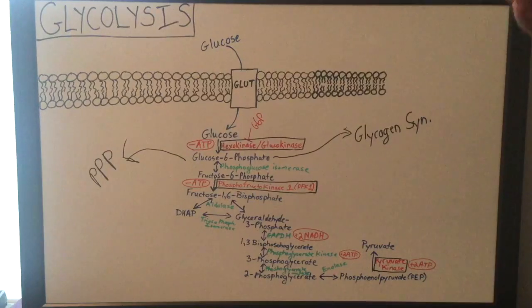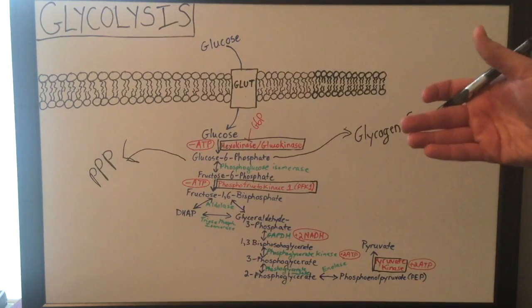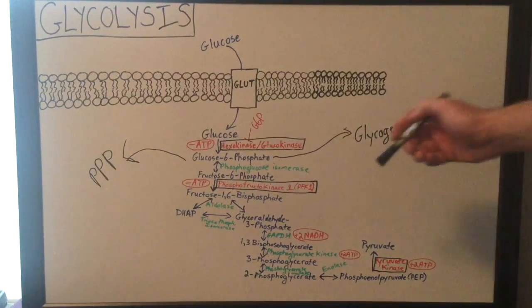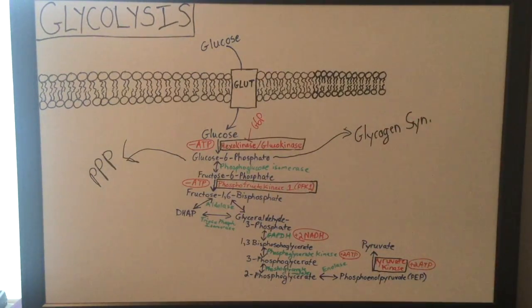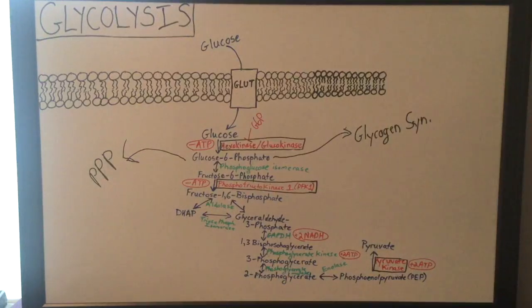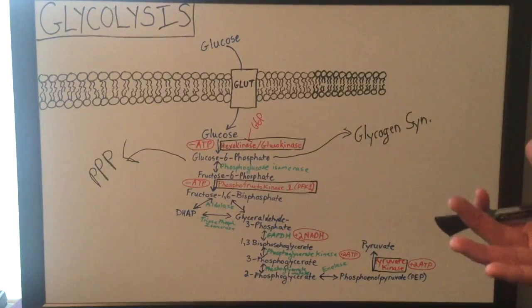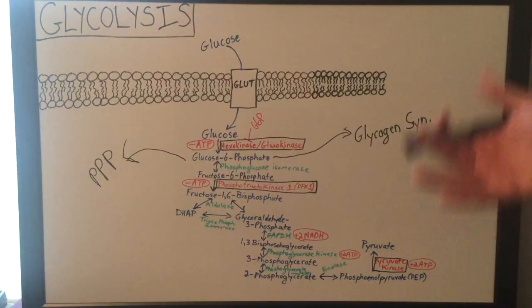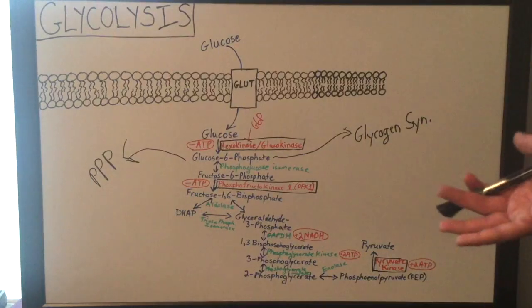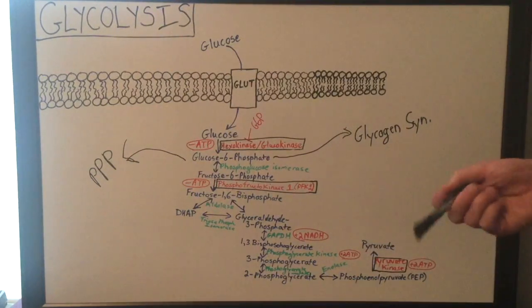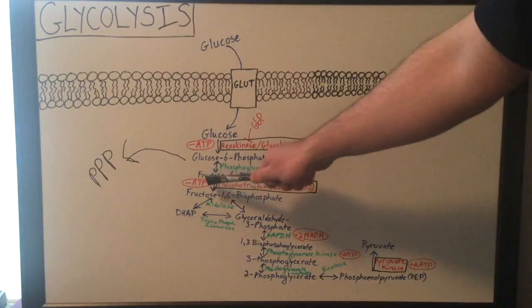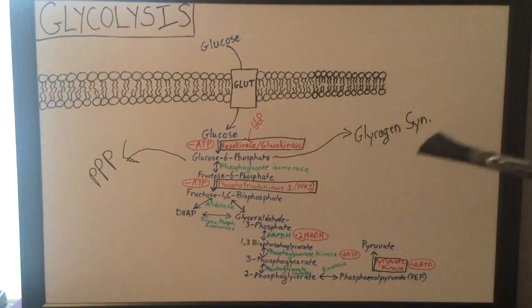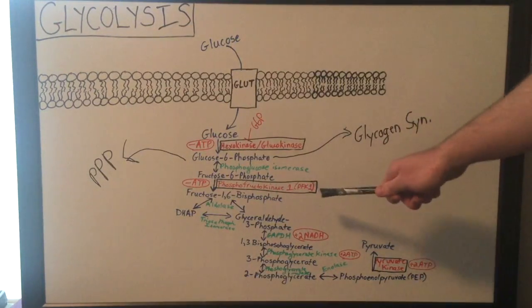Now, the next step for glucose 6-phosphate is actually an isomerization step utilizing the enzyme phosphoglucose isomerase, and that'll form fructose 6-phosphate. That is a reversible step — I have a two-headed arrow there indicating a reversible step. The next step, once you have fructose 6-phosphate, is the conversion of fructose 6-phosphate into fructose 1,6-bisphosphate via the enzyme phosphofructokinase 1 (PFK1). You also consume one ATP in this step — so this is another ATP-consuming step.